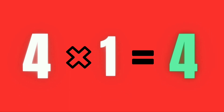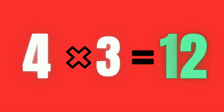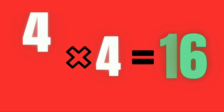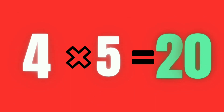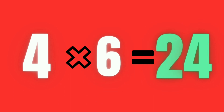Four ones are four. Four twos are eight. Four threes are twelve. Four fours are sixteen. Four fives are twenty. Four sixes are twenty-four.